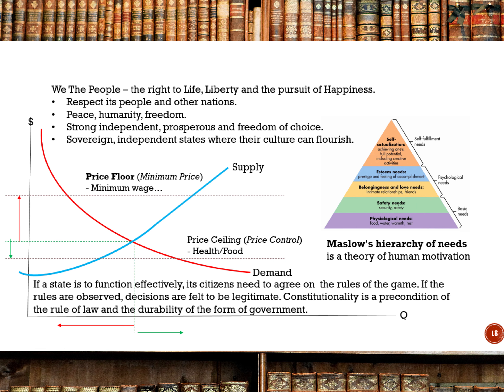Let's think about the words 'we the people' and 'the right to life, liberty, and the pursuit of happiness.' By respecting people and other nations, we can achieve peace, humanity, and freedom. International trade can offer a strong sense of independence and allow a nation state to be prosperous and allow its people to have freedom of choice. If a nation runs its business on a macro point of view in a way that it offers an equal trade balance with its partners, it will result in a win-win situation where both cultures can flourish.